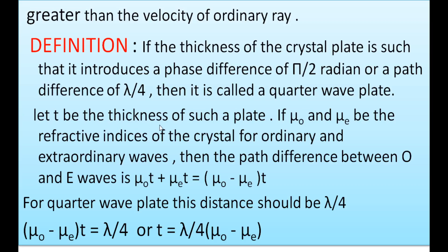Let t be the thickness of the crystal plate. Let μ₀ and μₑ be the refractive indices of the ordinary and extraordinary waves. Then the path difference between ordinary and extraordinary waves is (μ₀ − μₑ) × t, because μ₀ is greater than μₑ. This value equals λ/4, so t = λ / [4(μ₀ − μₑ)]. This is the formula for the Quarter Wave Plate.